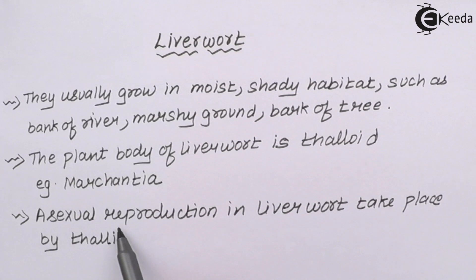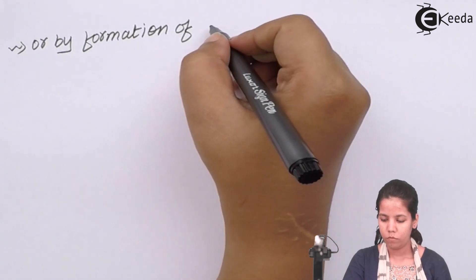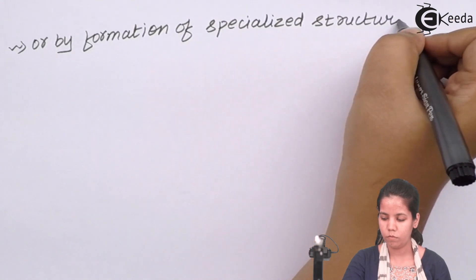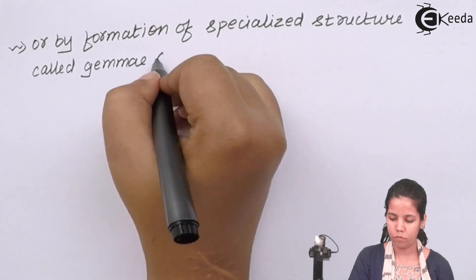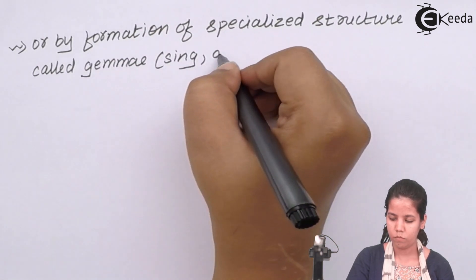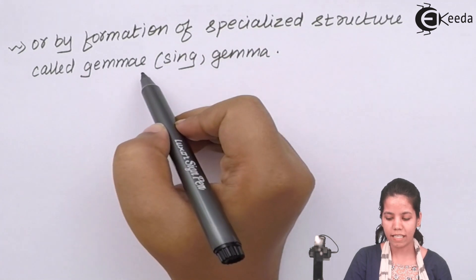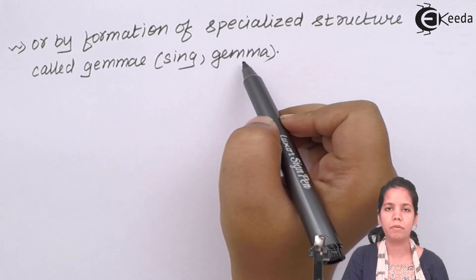Sexual reproduction in Liverworts takes place by thallai, that is a germ form. Sometimes specialised structures called Gemmae or Syngamae cells are also produced for reproductive purposes.